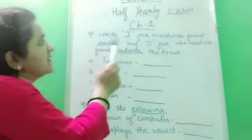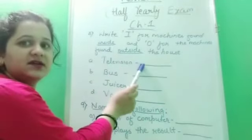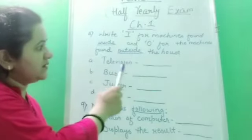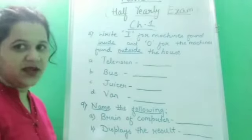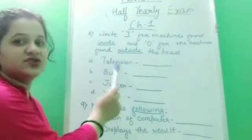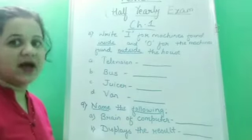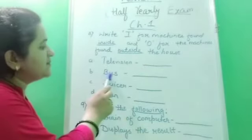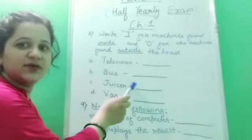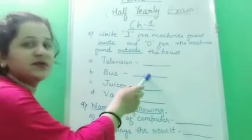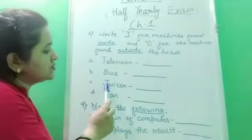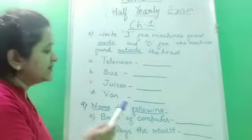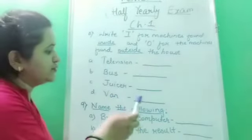Question number eight: write I for machines found inside and O for machines found outside the house. The first one is television — it is found inside the house, so write I. Next is bus — buses are found outside the house, so write capital O. Next, juicer — it is found in the kitchen, inside the house, so write I. Next is van — van is found outside the house, so write O.